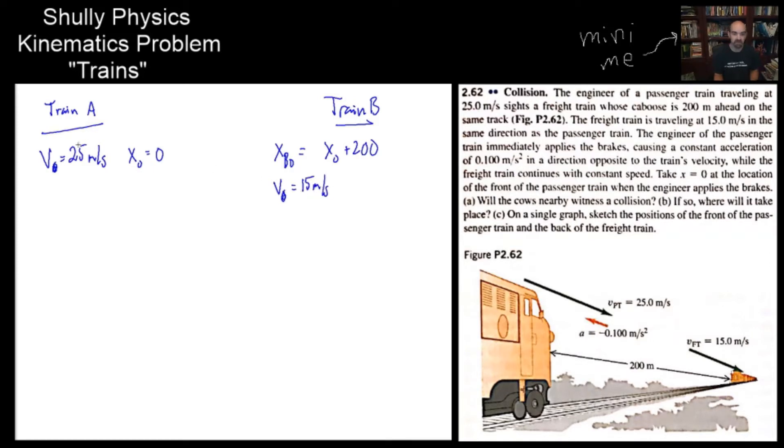Now it says the same direction, so if I'm calling this value positive, then this 15 should also be positive as well. The engineer of the passenger train immediately applies the brakes, causing a constant acceleration of 0.1 meters per second squared in the direction opposite its velocity. So it's going to have an acceleration of negative 0.100 meters per second squared.